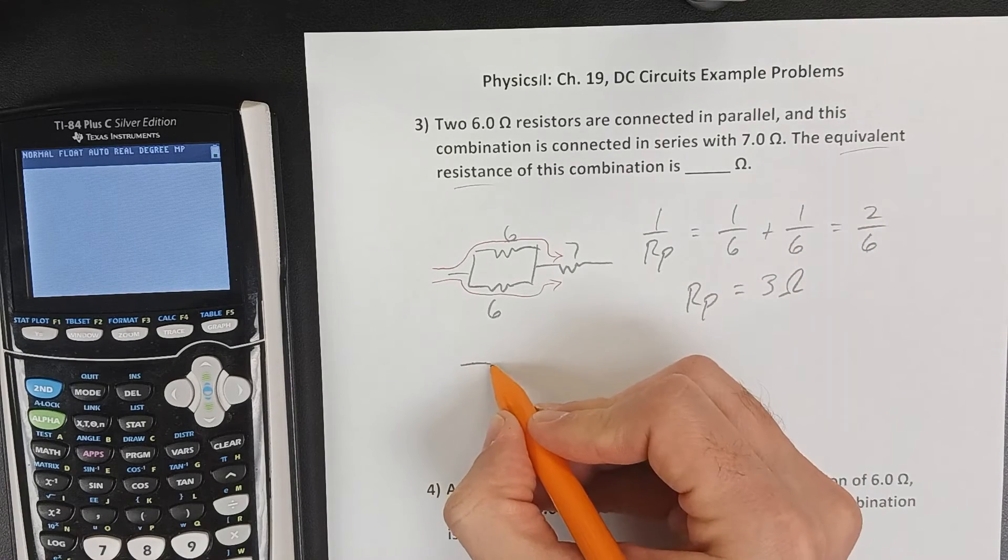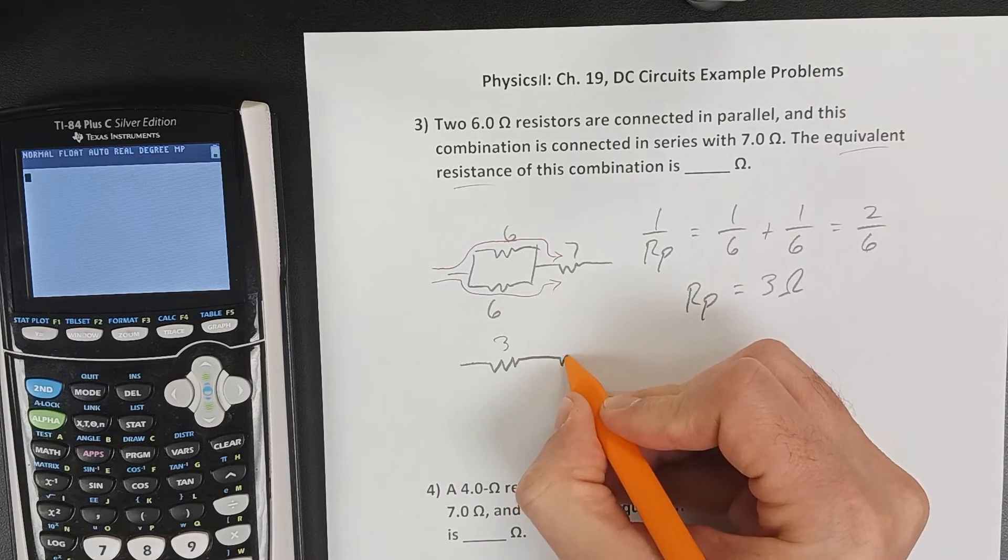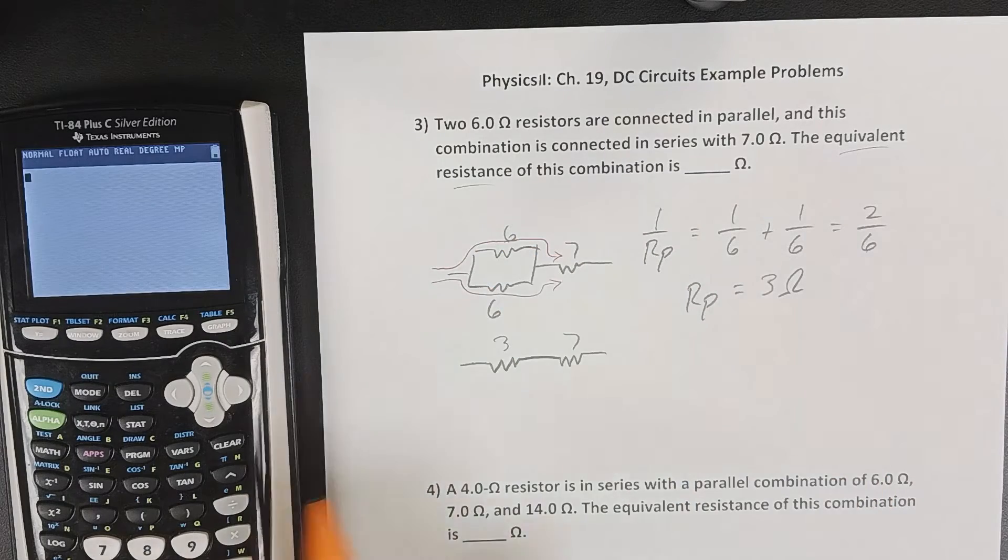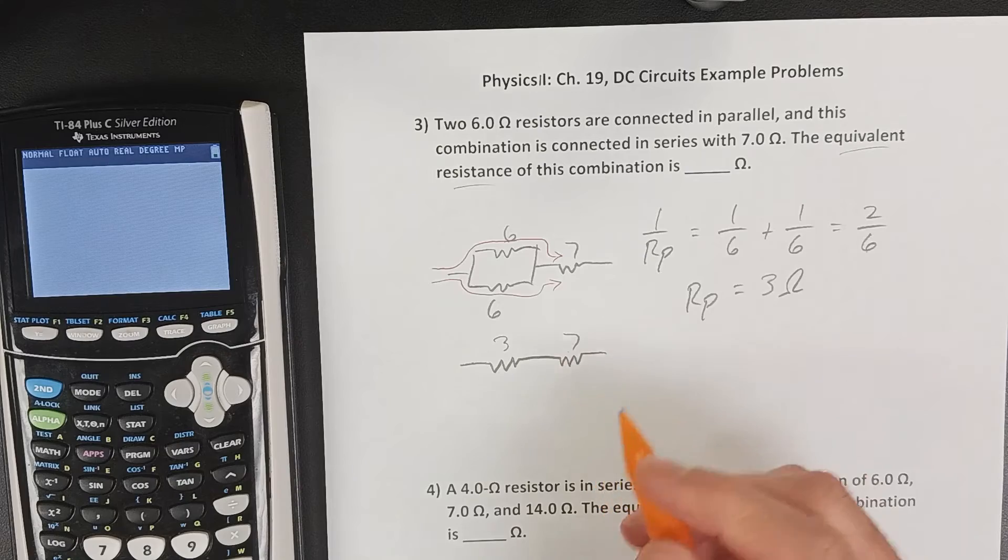And so that means if I redraw this, that now I have a three ohm resistor, that's the equivalent of these two sixes, a three ohm resistor in series with a number seven.